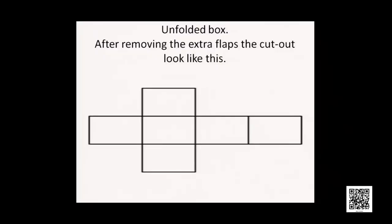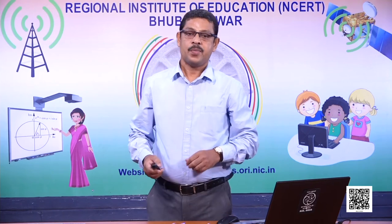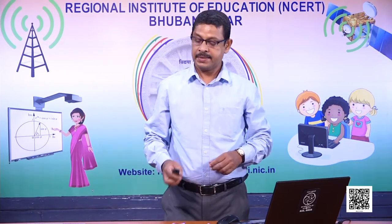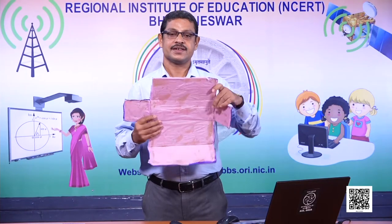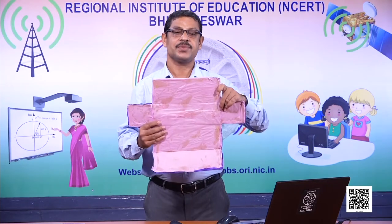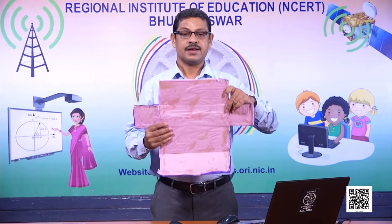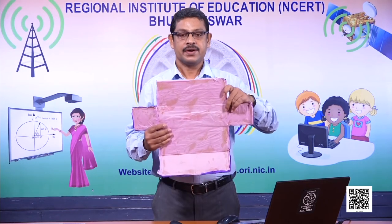You see here, this is called the net of a box. After removing the extra flaps, the cutout looks like this. This is called the net of the box. This is also called perspective drawing. The art of representing a 3D object on a 2D surface so as to give the right impression of their dimensions is called perspective drawing.